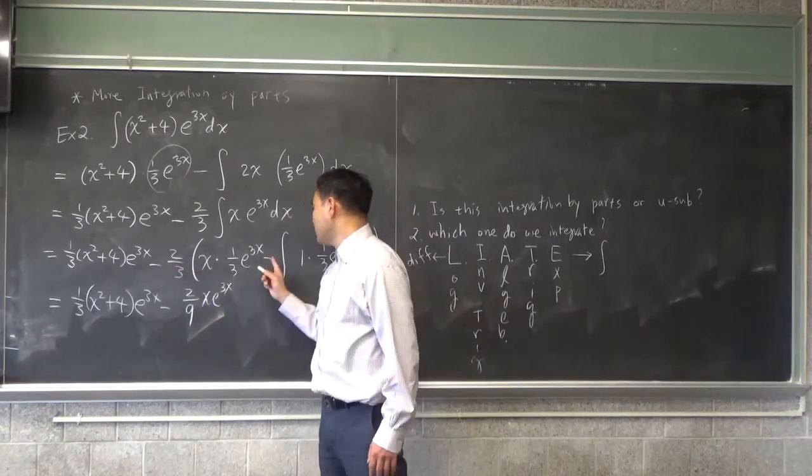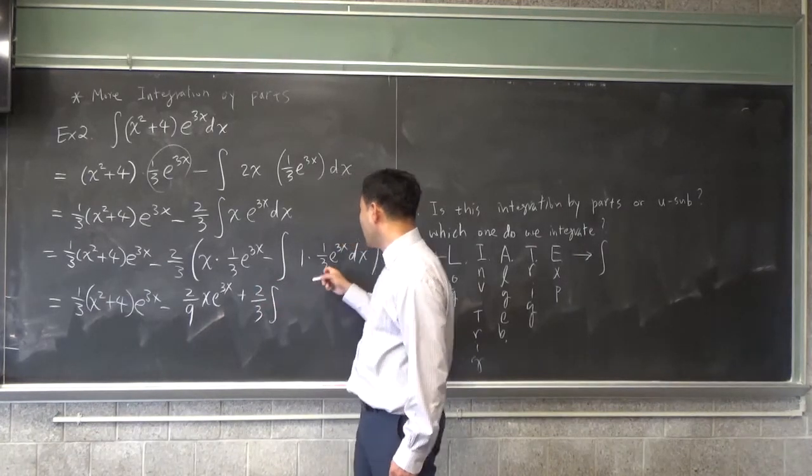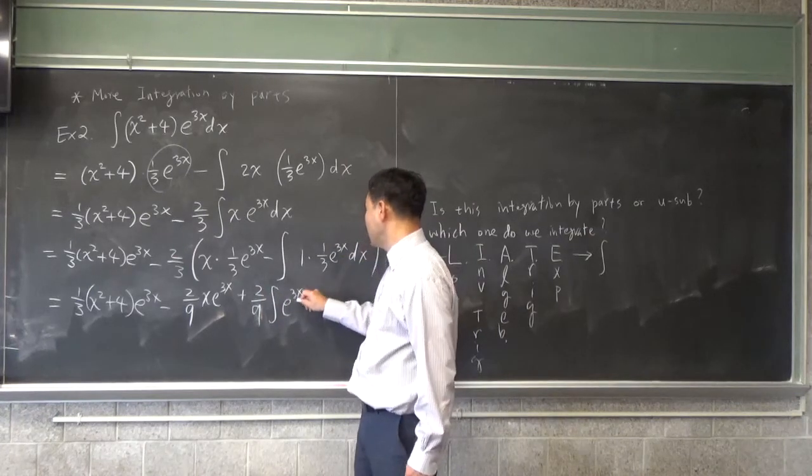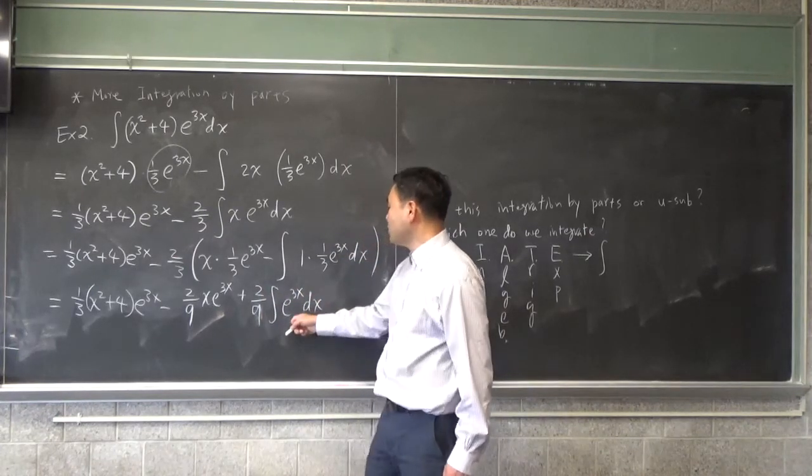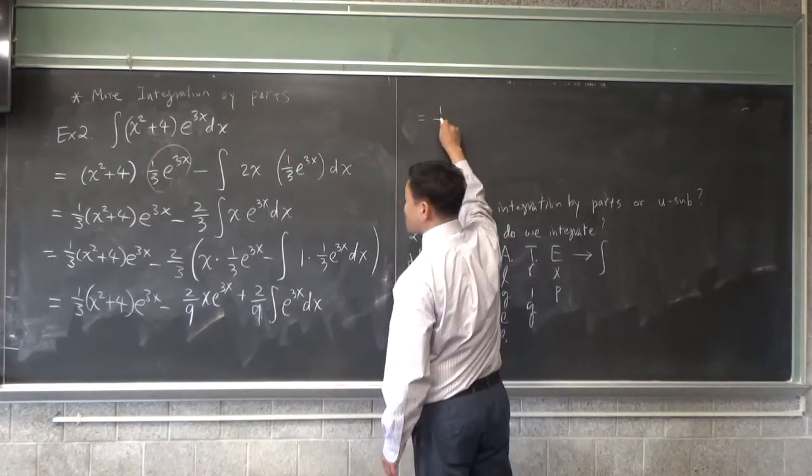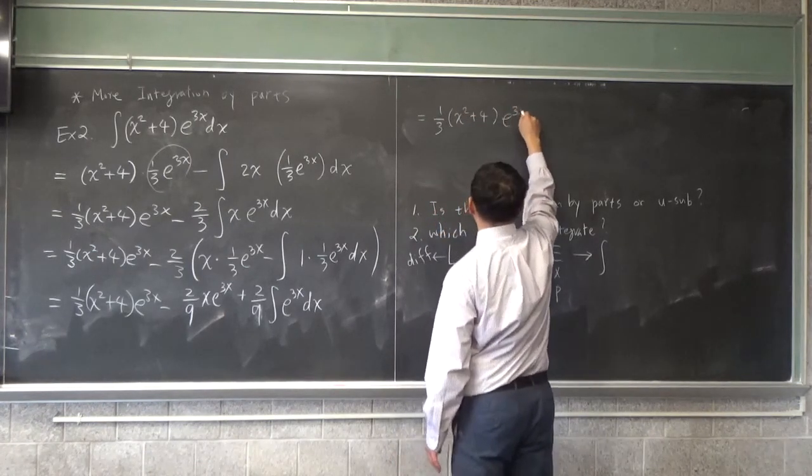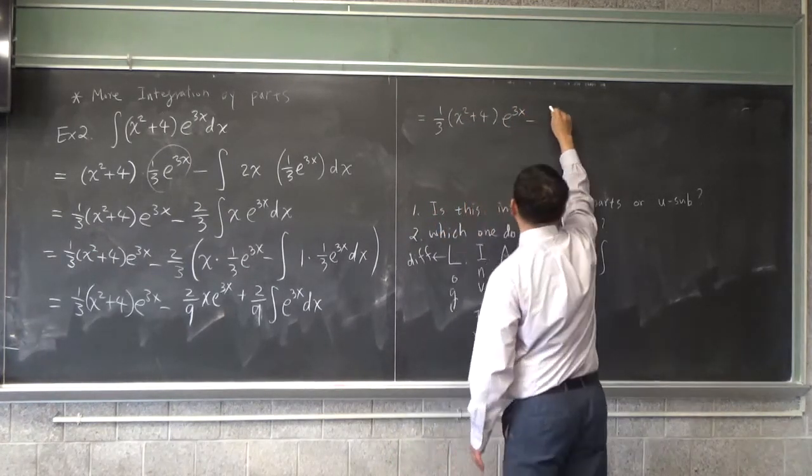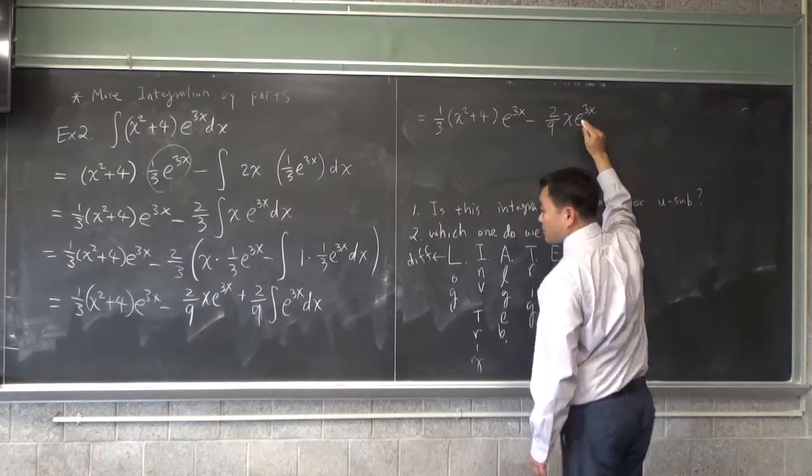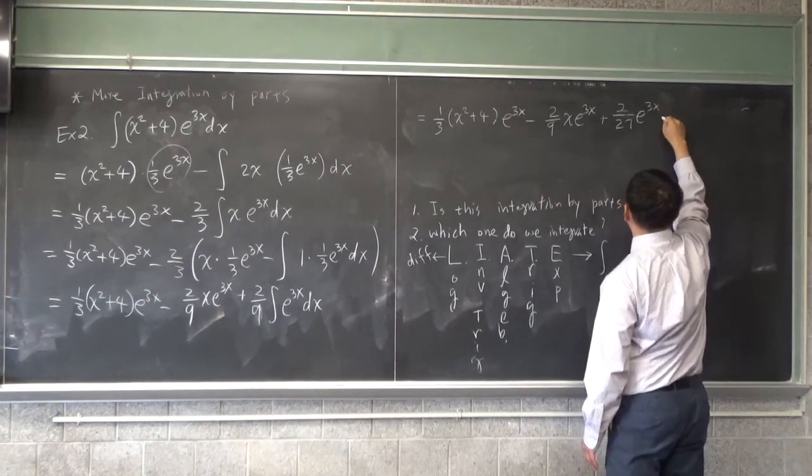It's negative, negative, so it's positive. Positive two-thirds. And, oh, one-third can come outside as well. And this integrates to, again, one-third e to the 3x. Therefore, what we get is one-third x squared plus four e to the 3x minus two-ninths x times e to the 3x plus two over 27 e to the 3x plus c.